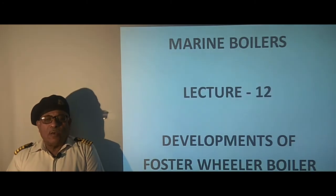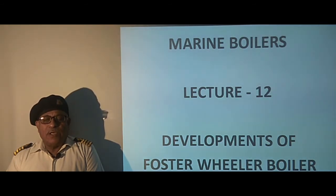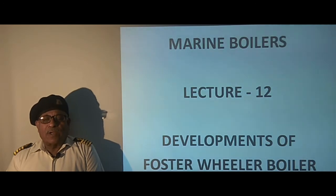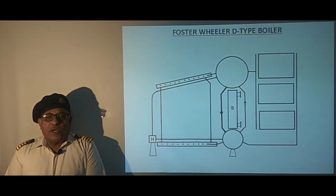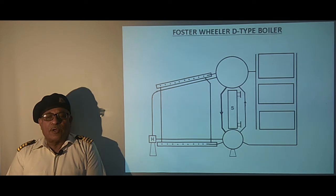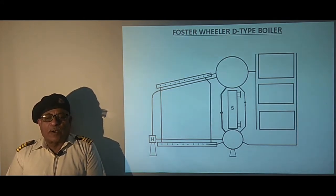These are modern water tube boilers of D-type with two drums. Several developments such as ESD-1, ESD-2, ESD-3, ESD-4 and ESRD were carried out and are being discussed in the subsequent slides. This slide shows a D-type boiler which consists of three rows of screen tubes and a large number of small diameter generating tubes. This was the original design of the Foster Wheeler boiler. Let's first see the main components of the boiler.